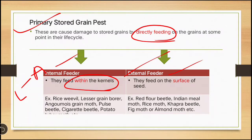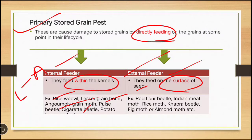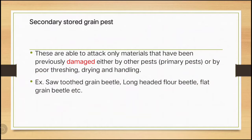External feeders feed only on the surface of the seed. Examples of internal feeders are: rice weevil, lesser grain borer, Angoumois moth, pulse beetle, and cigarette beetle. Examples of external feeders are: red flour beetle, Indian meal moth, rice moth, Khapra beetle, and almond moth.